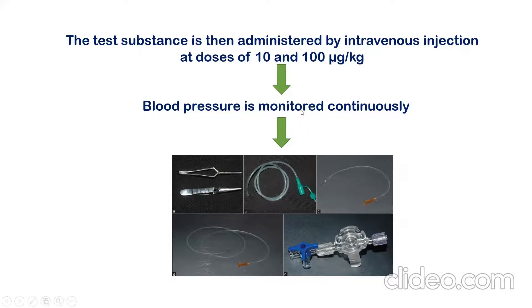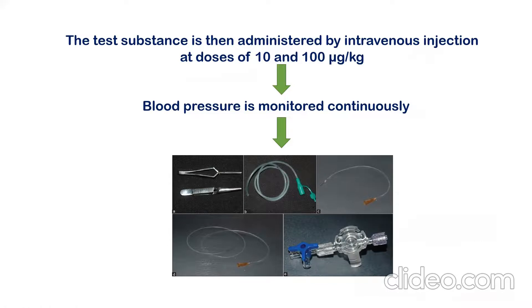For monitoring of blood pressure, you need certain things. This is a pressure transducer — it will sense the change in pressure, and this part of the pressure transducer is attached to the recording system which records the change in blood pressure. Here, this is attached to the carotid artery. This is the tubing, and this is the bulldog cannula, which is used during the cannulation of the carotid artery.